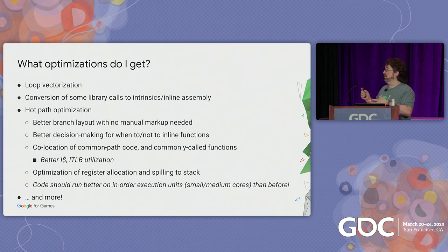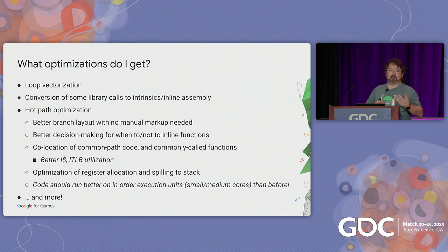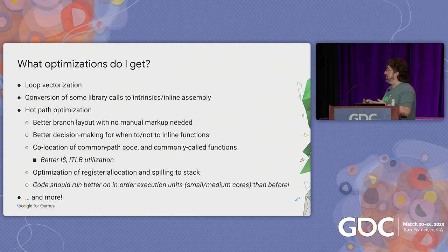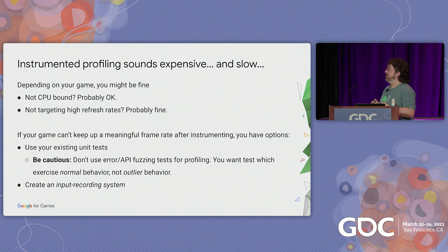One huge benefit is that code should run better on in-order execution units. If you ever did PlayStation 3 or Xbox 360 programming on the PowerPC, you know all about dealing with in-order execution processes. On most SoCs on phones today, the small and medium cores are in-order execution units; on the large cores they're out-of-order. This will make your code function better on those smaller cores. And there are other optimizations in there as well — they may change over time as LLVM keeps adding more features.